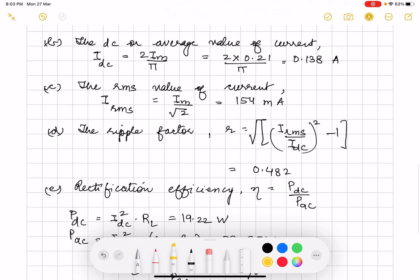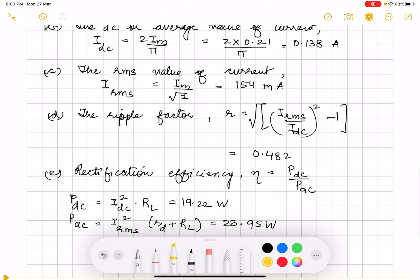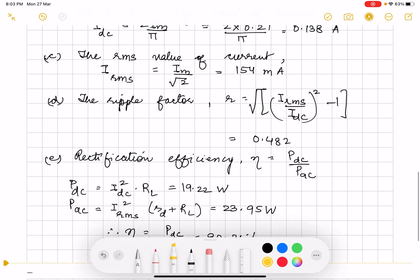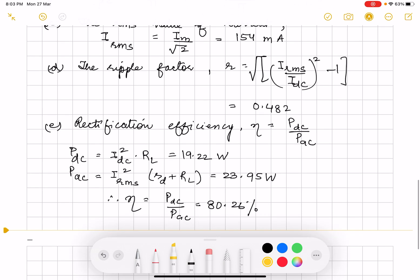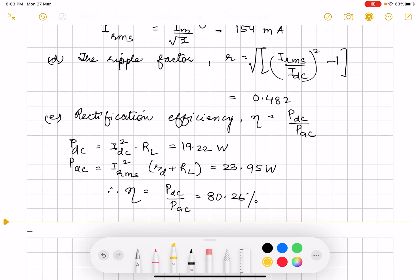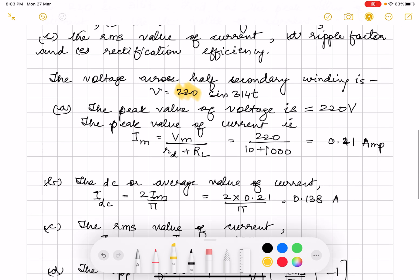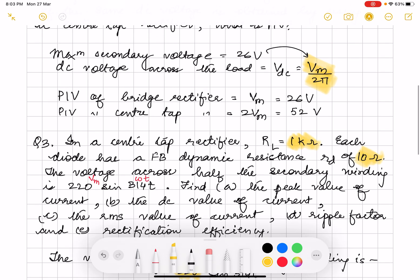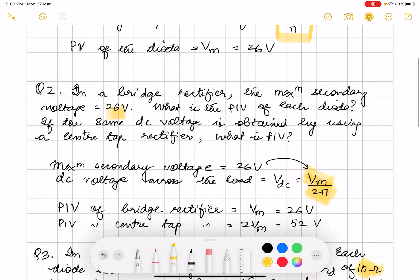So power DC is IDC square into RL. IDC now we know, we have found out, RL is given. Put the values. You should get like 19 watt. For power AC, it is IRMS square into RD plus RL. Put the values again. You should get 23.9 watt. For rectification efficiency, you have to take the ratio of the two which should come out to be 80.26%. So please practice similar questions. Best is you have to remember the formulae.